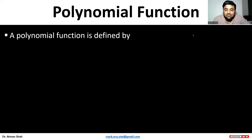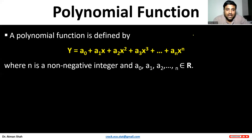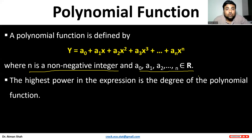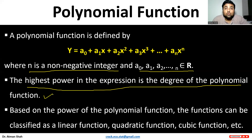Third is the polynomial function. A polynomial function is defined by y = a0 + a1x + a2x² + a3x³ + ... + anx^n. Here n is a non-negative integer and a0, a1, a2, up to an belong to R. The highest power in the equation is the degree of the polynomial function. Whether the function is linear, quadratic, or cubic depends on the power of the polynomial function.